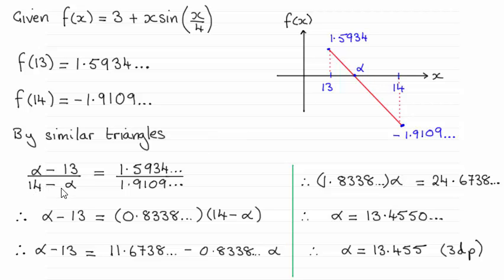It's going to be in exactly the same ratio as comparing this length here with this length here. And you've got to be careful because it is lengths that we're comparing. So we don't have a negative value on that minus 1.91.